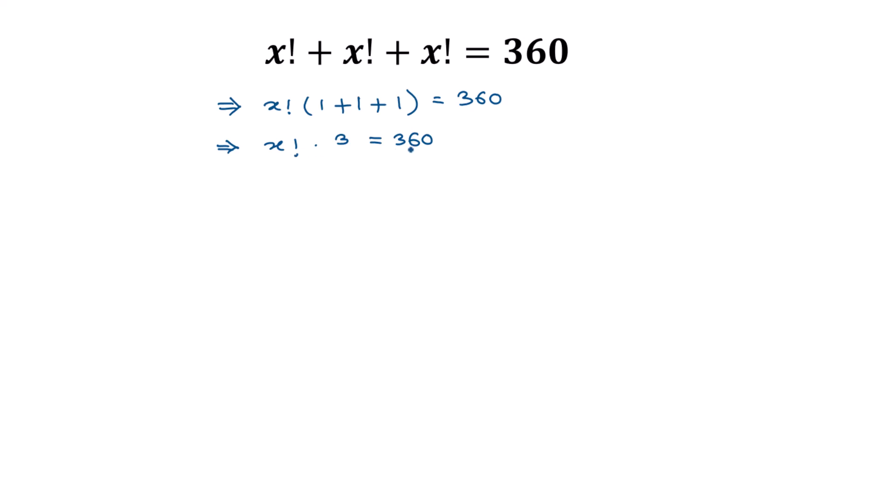Now divide both sides by this three. We can write x factorial times three over three is equal to 360 divided by three.